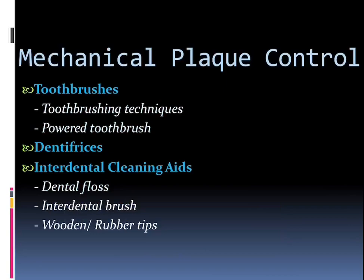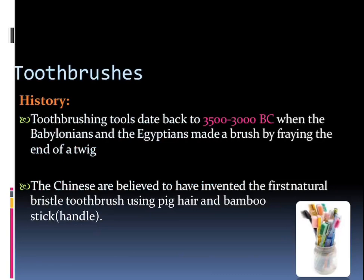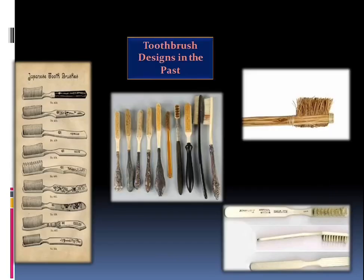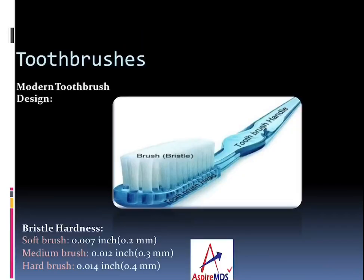And wooden tips. Talking about brushes, it has been a very long history of how toothbrushes were used — in about 3500 to 3000 BC when the Babylonians and Egyptians made a brush by fraying the end of a twig. Then the Chinese were believed to have invented the first natural bristle toothbrush using pig hair and a bamboo stick. These are how the ancient toothbrushes used to look — totally natural — and these are the modern toothbrush designs.